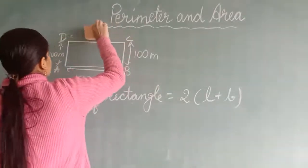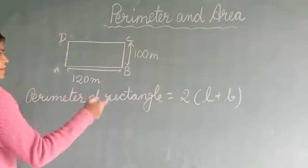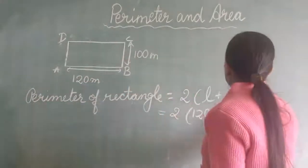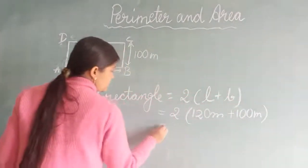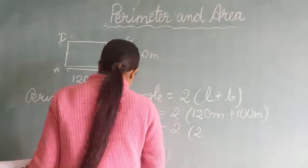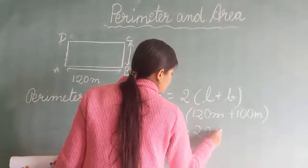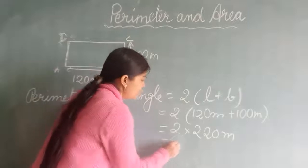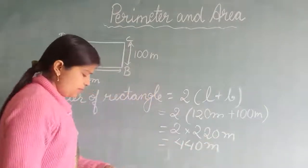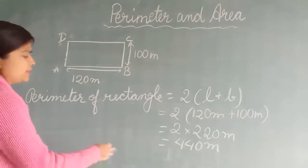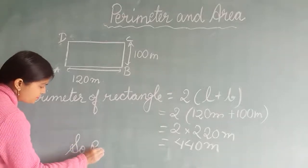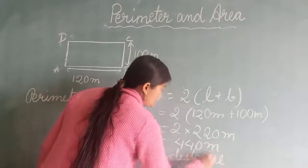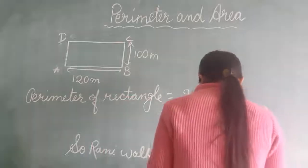Adding 120 and 100 gives us 220. Then, perimeter equals 2 times 220, which gives us 440 metres. So Rani walks a distance of 440 metres around the path every day.